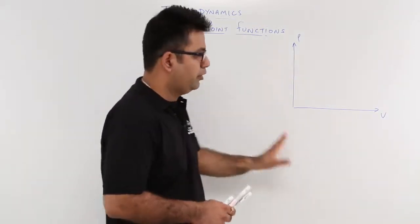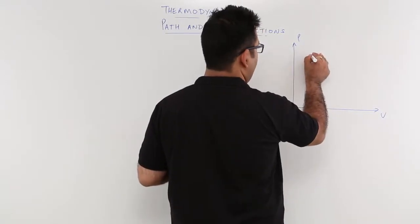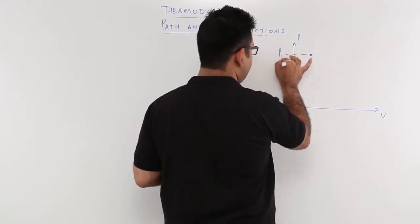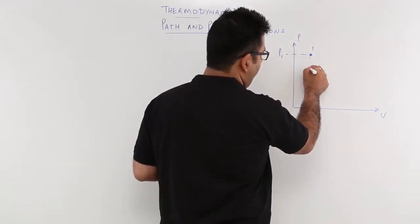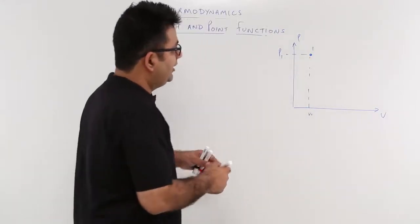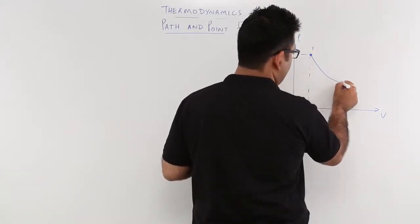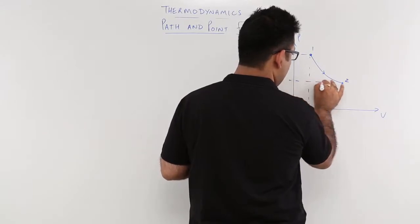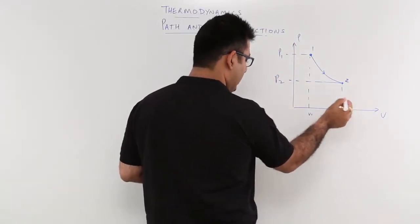For that I have drawn a PV plot. We have state 1 with state variables P1 and V1. Now let us change the state and have a process — any random one — so you have P2 and V2 at state 2.